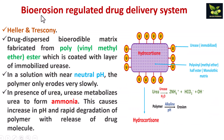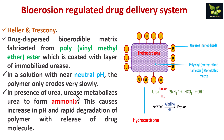In alkaline solution the amino groups are neutral and the membrane is unswollen and impermeable. But when glucose penetrates into the membrane, it is enzymatically oxidized by glucose oxidase entrapped in the membrane, forming gluconic acid. Because of this acid, the permeability of the membrane is increased and insulin molecules are released. Next is bioerosion regulated drug delivery system, given by Heller and Tresconi. The drug-dispersed bioerodible matrix is fabricated from polyvinyl methyl ether ester and coated with a layer of immobilized urease. At neutral pH the polymer erodes very slowly, but in the presence of urea, urease metabolizes urea to form ammonia, causing increase in pH and rapid degradation of the polymer with release of drug molecules.